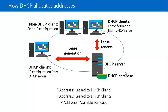DHCP uses IP broadcast to initiate communication with clients. Therefore DHCP servers are limited to communication within their IP subnet, which means that in many networks there is a separate DHCP server for each IP subnet. In a network where a DHCP server is installed, if you configure a computer with a static IP address, that computer will not be a DHCP client — it becomes a non-DHCP client and does not communicate with the DHCP server. Servers and network printers are typical examples of devices that have static IP addresses.